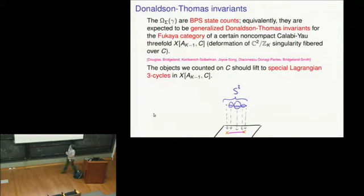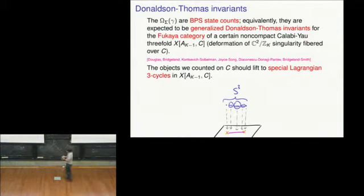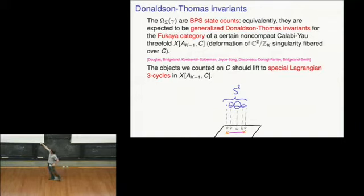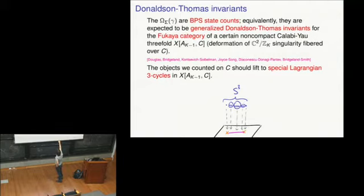On the one hand, these are BPS state counts. On the other hand, they're supposed to have a purely geometric meaning as the Donaldson-Thomas invariants — or generalized Donaldson-Thomas invariants — attached to the Fukaya category of a particular Calabi-Yau threefold. What's the Calabi-Yau threefold? You take your complex curve and take a C^2 mod Z_K singularity fibered over that curve, then deform it to make it smooth; the parameters of that deformation are the same as those determining the covering. These generalized DT invariants have been studied by many people: Douglas, Bridgeland, Kontsevich-Soibelman, Joyce, and Song. In the case k equals 2, this story has been made precise by Bridgeland and Smith.